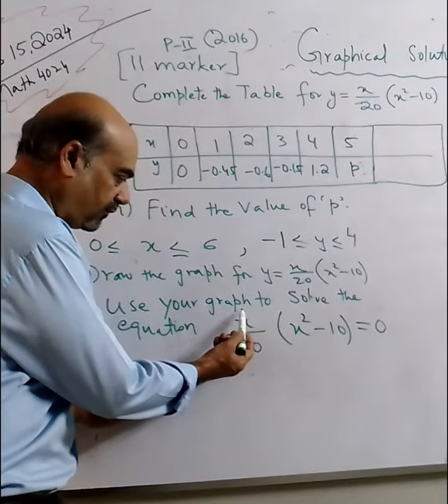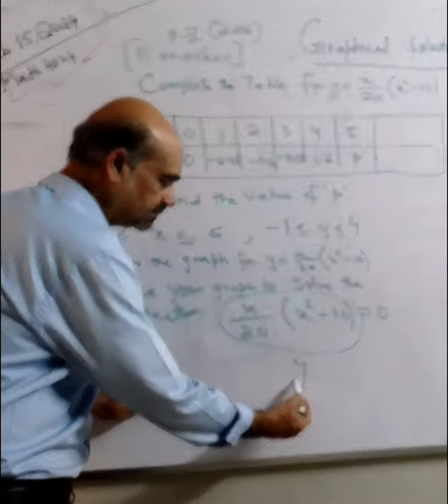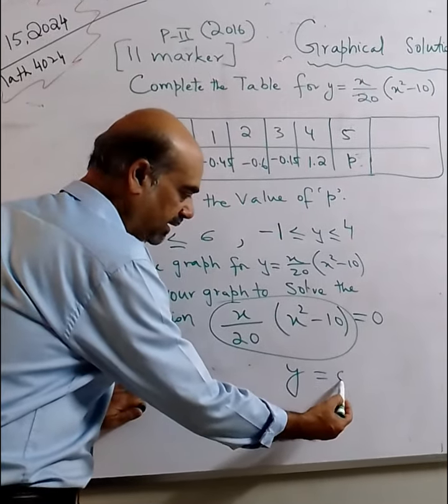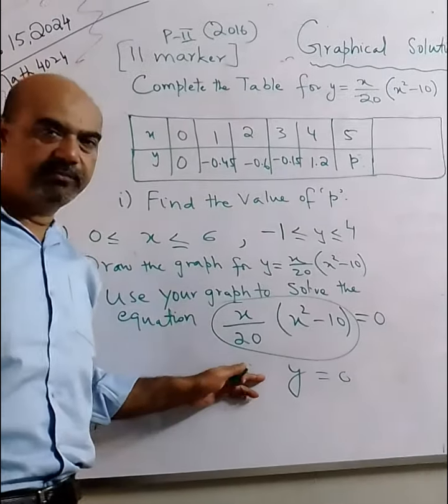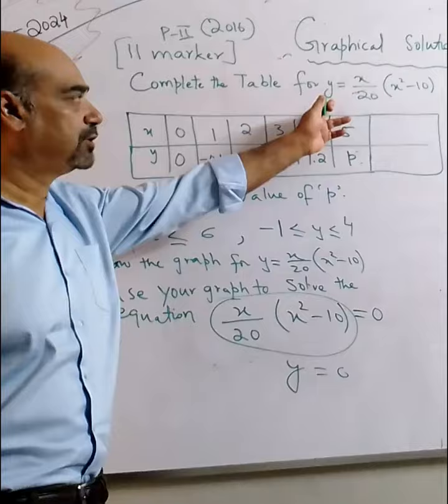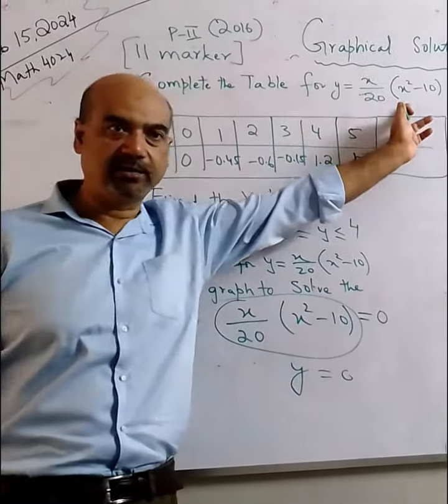In place of this, can I write y? And then equals to 0. Why we are writing y over here? Because originally it was given that y is equal to x upon 20, x square minus 10.